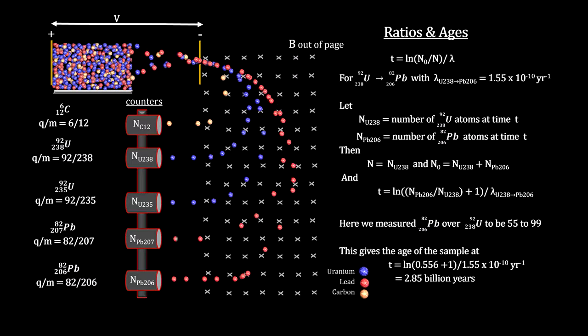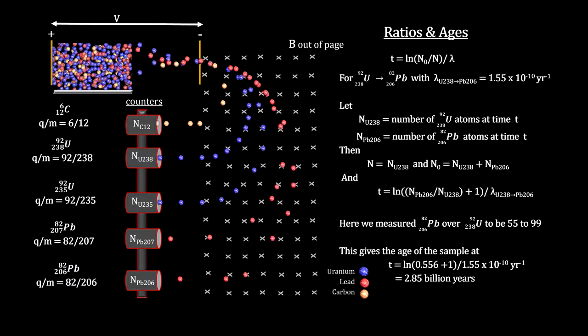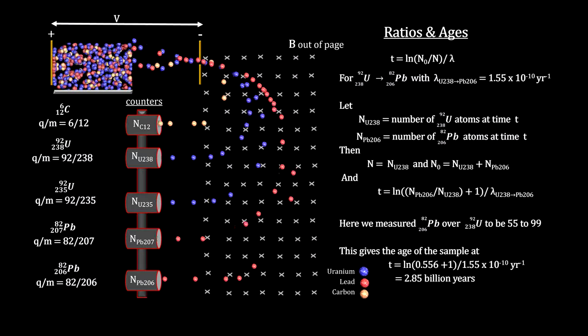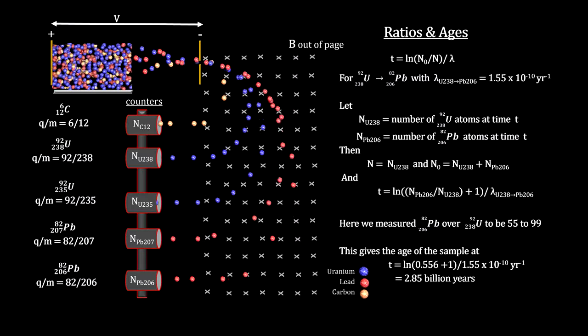The counts for uranium-238 over lead-206 gave us a ratio of 55 to 99 lead over uranium. This produces an age calculation of 2.85 billion years.